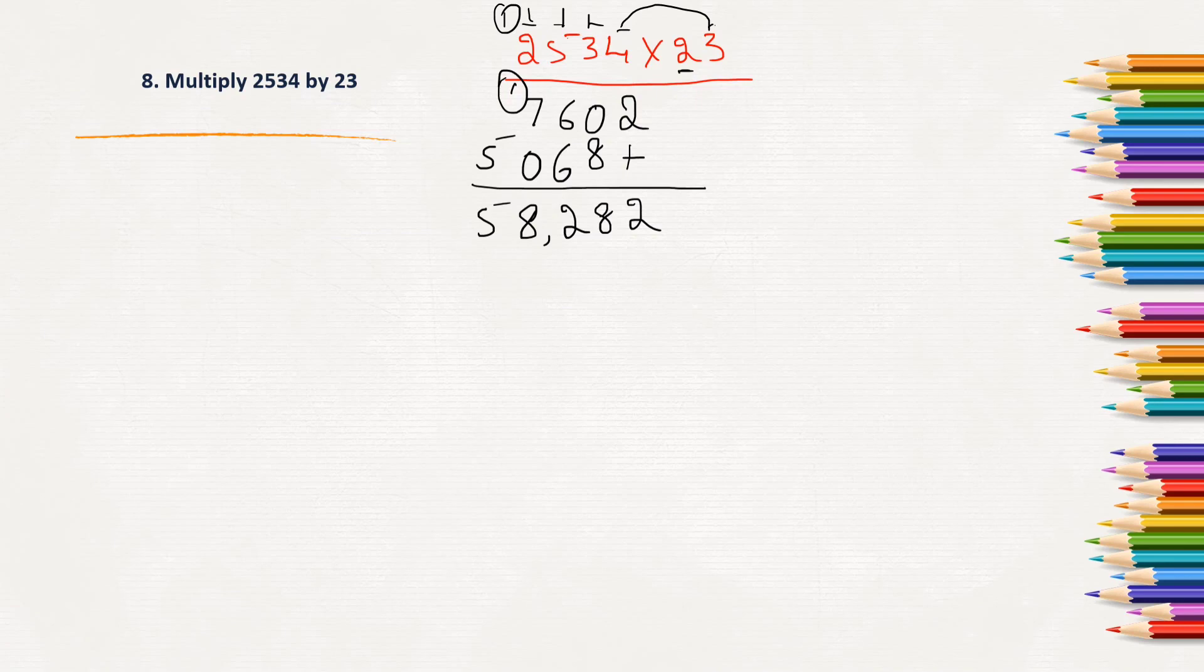Next question. Multiply 1250 by 342. Here are 3 digits with which we will have to multiply 1250. Similarly, 1250 into 342. First, we will multiply 1250 with 2, then with 4, then with 3.